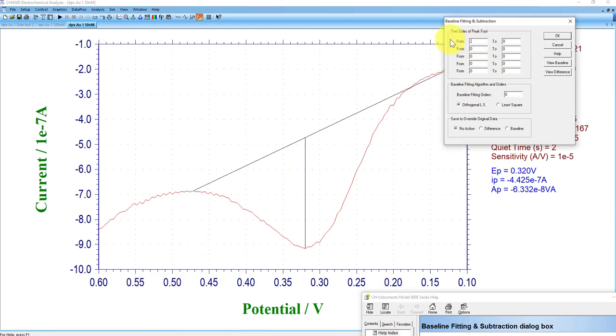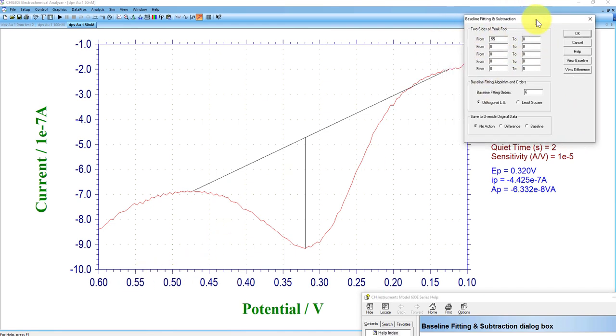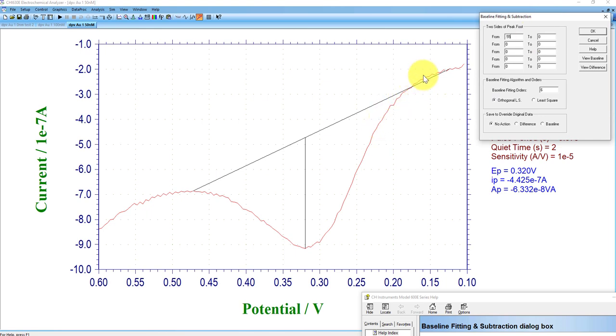And then similarly, we'll move out here and move out to a point where this flattens out again, so probably around here, so say 0.15. You'll want to be consistent if you're using the baseline subtraction tool here.